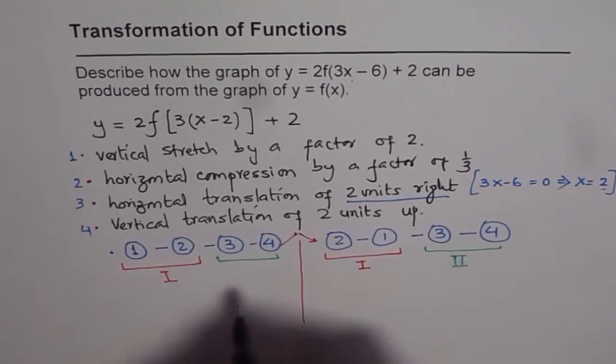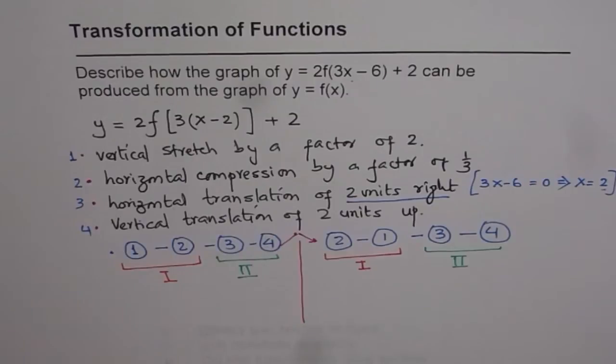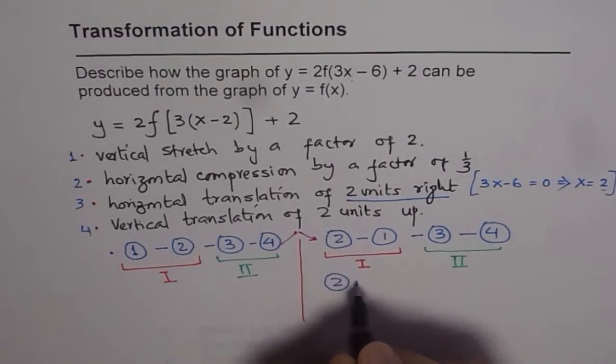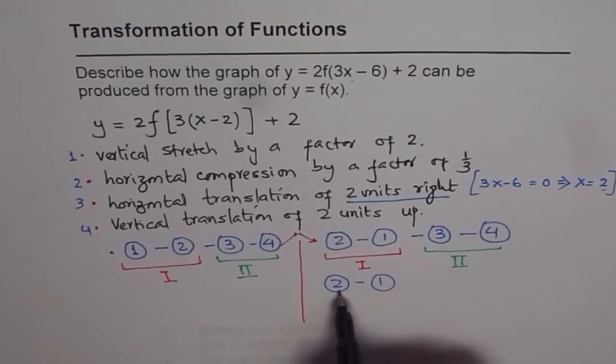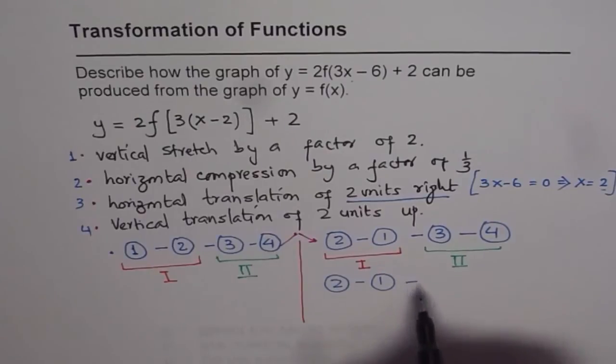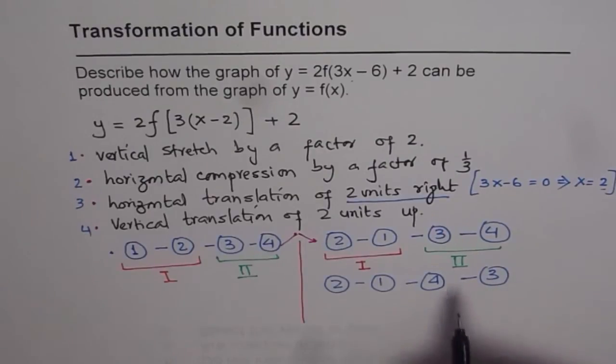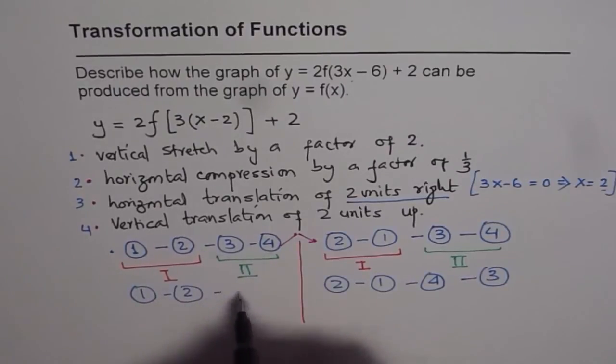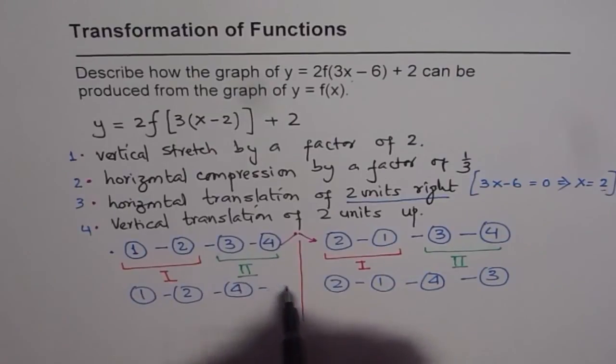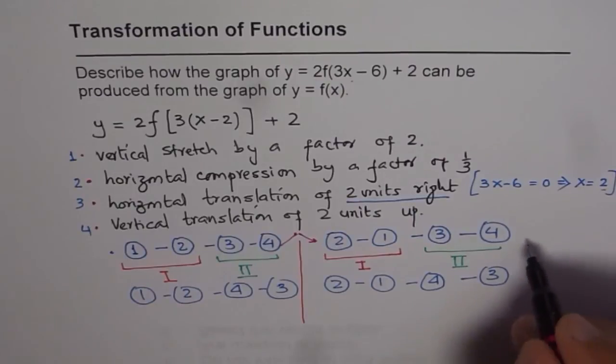These I'll call set 2. For any transformation, you could change these orders also. What I'm trying to say is that you could do step number 2, step number 1, that is horizontally compressed by a factor of 1 third, vertically stretched by a factor of 2, and then you could translate up first, and then to the right. So that will also work. You could mix and match. So you could do here 1, 2, and 4, and 3, 4 and 3. So these are all possible steps which can be done, and all are correct.